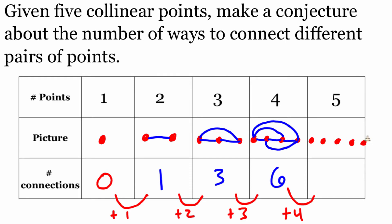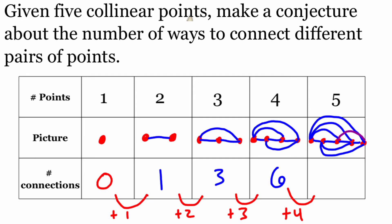Looking at the connections for five points: we connect points 1-2, 2-3, 3-4, 4-5, then 1-3, 1-4, 1-5, then 2-4, 2-5, and finally 3-5. If we count all of these up, there are 10 different connections — and that does follow our pattern, since six plus four gives us 10.